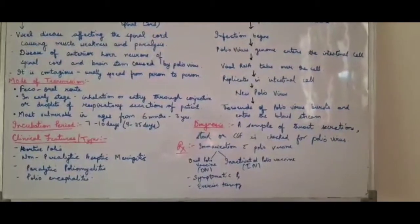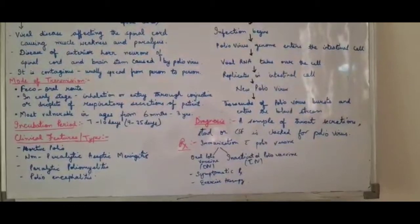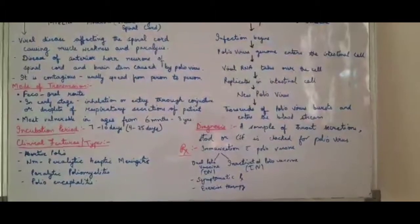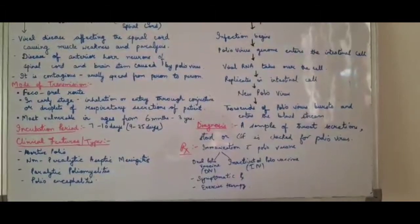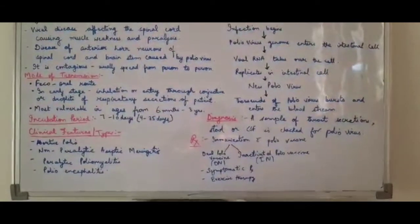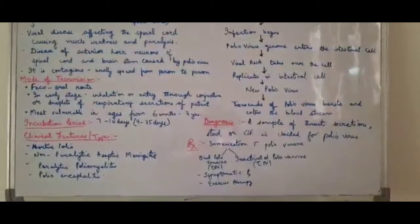First, we will talk about abortive polio. In abortive polio, there are no specific signs or symptoms. But body pain, fever, and sore throat - all these things you will see. Because the virus is present in the blood, but the nervous system is not involved in it, that is why there is no paralysis. Only muscle weakness is seen.